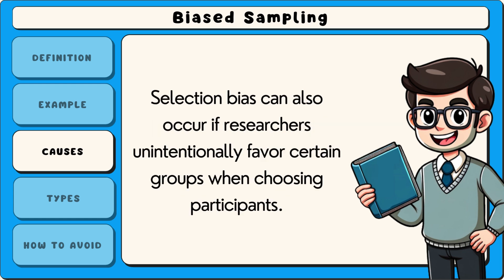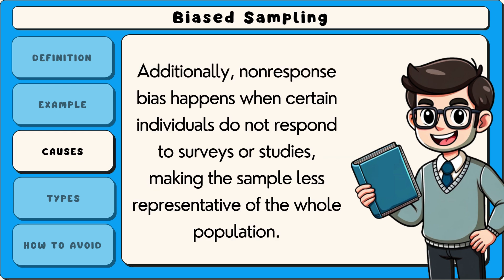Selection bias can also occur if researchers unintentionally favour certain groups when choosing participants. Additionally, non-response bias happens when certain individuals do not respond to surveys or studies, making the sample less representative of the whole population.